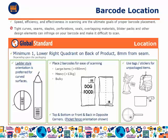The location of your barcode on your product packaging has a big impact on the speed, efficiency, and effectiveness of scanning at the retail point of sale. In general, global standards require that there is at least one barcode in the lower right corner on the back of the product, at least 8mm from the seam. This may vary depending on your packaging. Remember that tight curves, seams, staples, perforation, seals, overlapping materials, and other design elements can infringe on your barcode and make it difficult to scan.